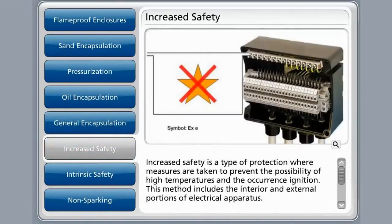Increased safety is a type of protection where measures are taken to prevent the possibility of high temperatures and the occurrence of ignition, including both interior and external portions of the electrical apparatus. The general application would include connection and distribution boxes, luminaires, measuring instruments, and devices that do not normally produce ignition during operation.